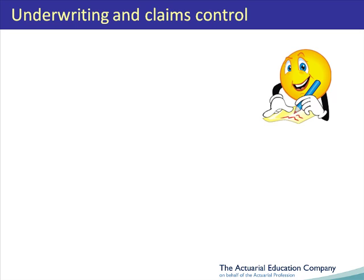In earlier units we have looked at methods of risk transfer, in particular reinsurance and alternative risk transfer. We will now start to look at how to cope with the risks that are not transferred to another party, that is how providers manage their risks in-house.